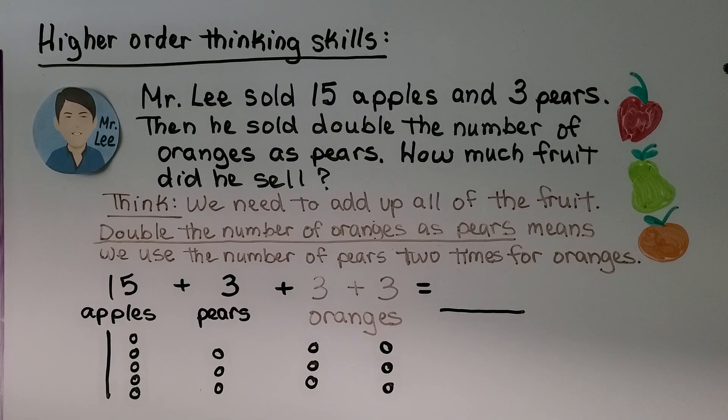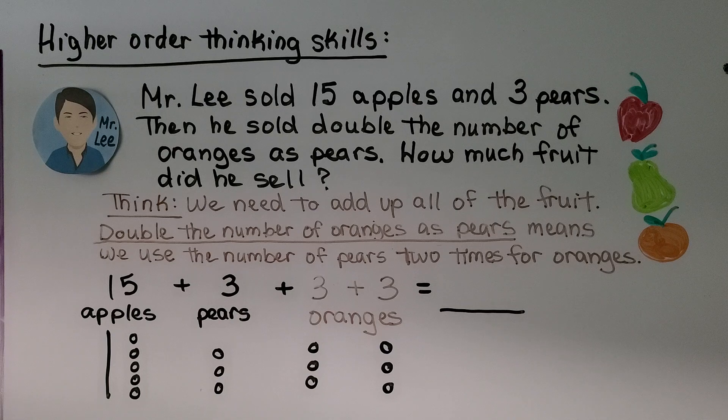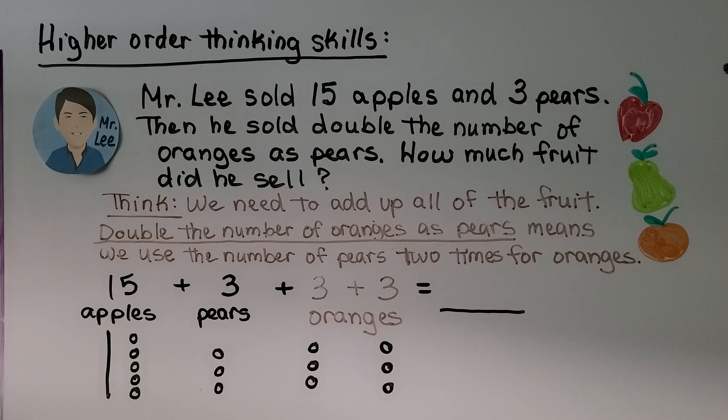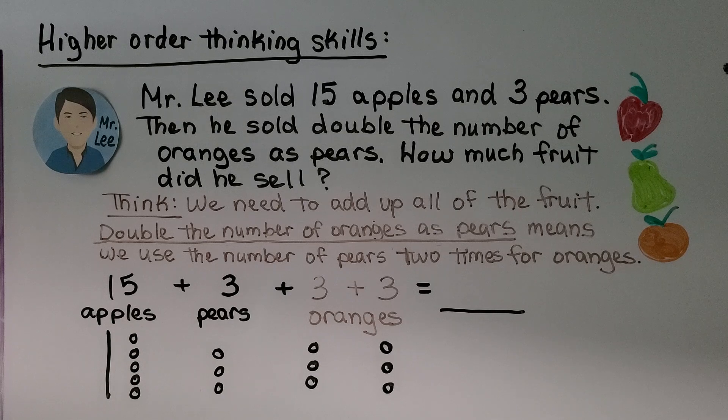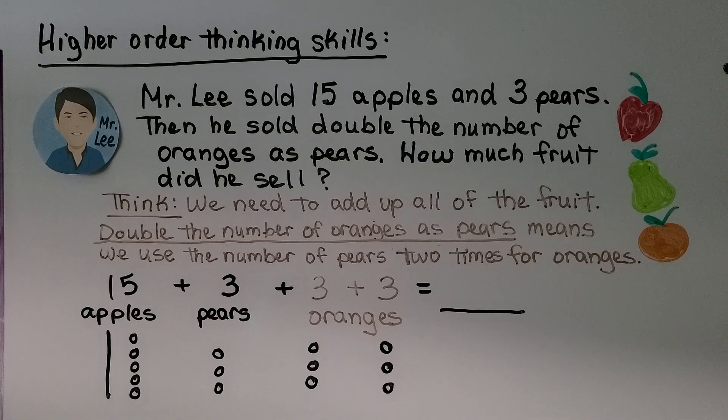Let's try some higher order thinking skills. Mr. Lee sold 15 apples and 3 pears. Then he sold double the number of oranges as pears. How much fruit did he sell? So think, we need to add up all of the fruit. Double the number of oranges as pears means we use the number of pears 2 times for the number of oranges.